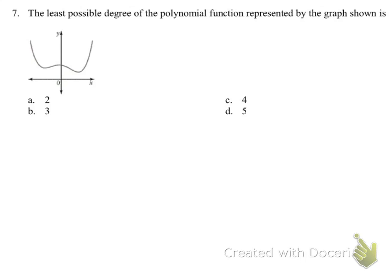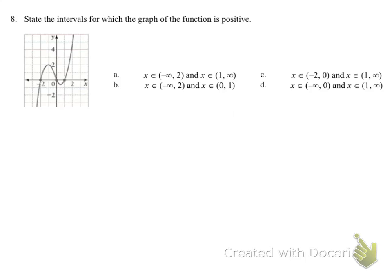The least possible degree of the polynomial shown in the diagram: the least possible degree is one more than the number of turning points. Since there are three turning points, that would make the degree four.